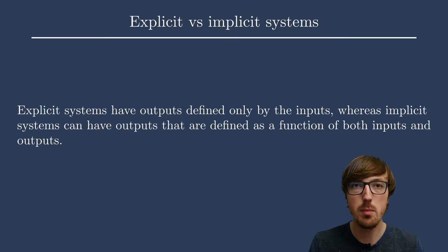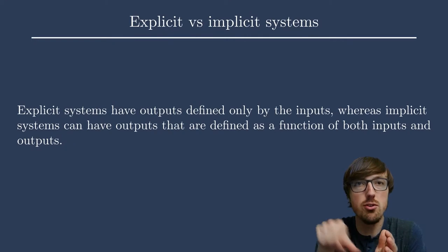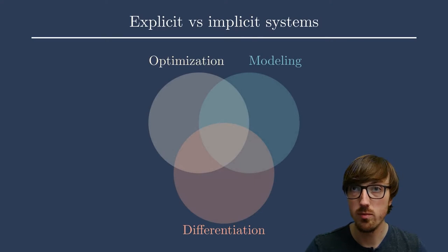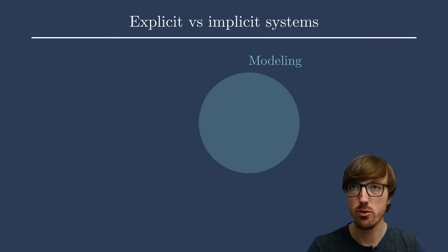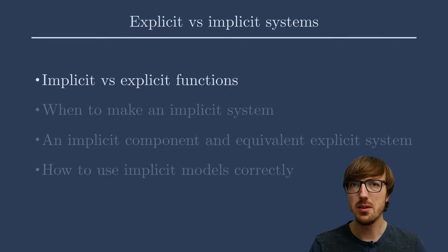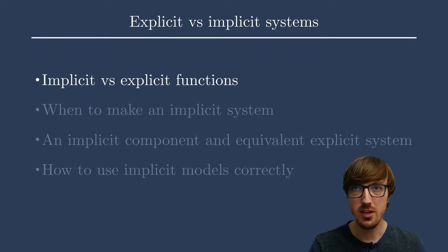In the case of OpenMDAO and MDO modeling, you can think of explicit systems as one where you can write just one equation or a set of equations that takes the inputs and maps them to the outputs, whereas the implicit ones need to have some sort of relationship that is being solved for. This absolutely has to do with the modeling category of this course. So first, let me just explain what are implicit and explicit functions.